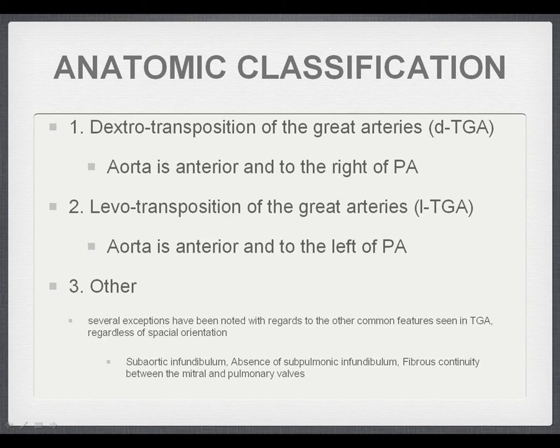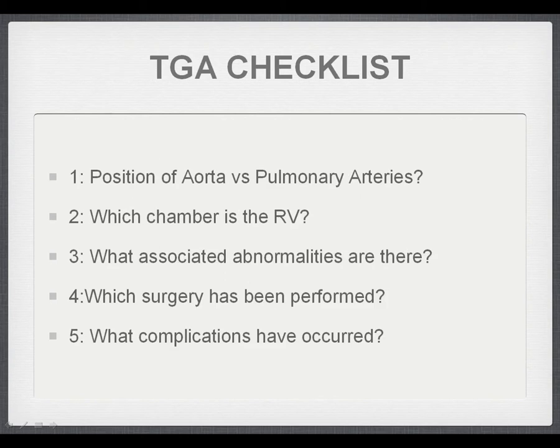When faced with this complex information, I break it down into a checklist approach for each individual scan. My checklist has five components: first, the position of the aorta versus the pulmonary artery; second, which chamber is the morphologic right ventricle; third, what other abnormalities are present; fourth, what surgery has been performed; and fifth, what complications can be identified on the different scans.